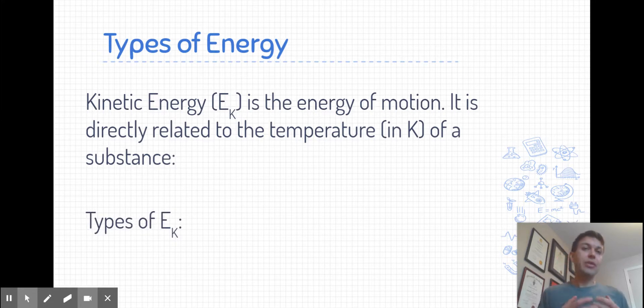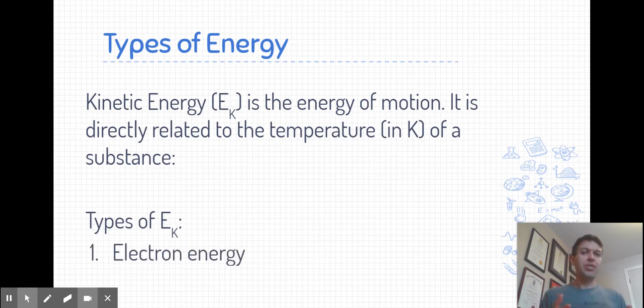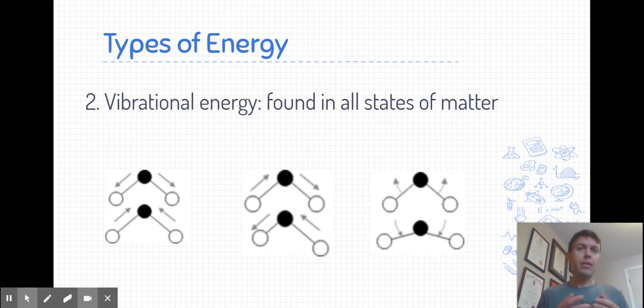Within a chemical system, there are four primary types of kinetic energy. The first one is electron energy. Those electrons are whizzing about the nucleus there, and they have kinetic energy. Not too important for a lot of the things that we're going to be discussing in this unit. Vibrational energy is the energy that's found in all states of matter. And it's the type of kinetic energy that when a substance is in the solid state, it's the only type of kinetic energy that it can undergo. And that is because those particles are fixed in place, and all they can do is vibrate. So their bonds can stretch together, they can stretch in opposite ways, or they can bend slightly as well. But they're all fixed in place during this time.